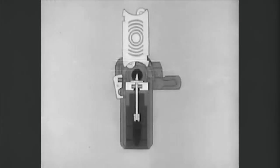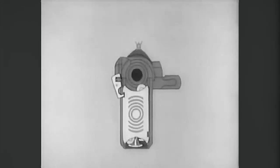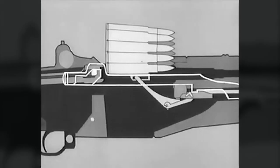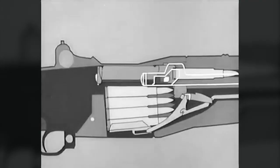When the fresh clip is loaded, the clip latch spring expands and the latch again engages the clip. The operating rod once more is released and the bolt goes forward loading a new round.